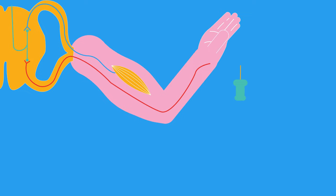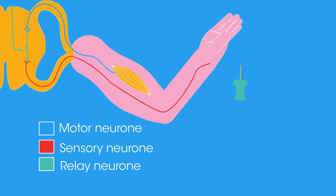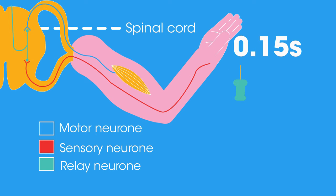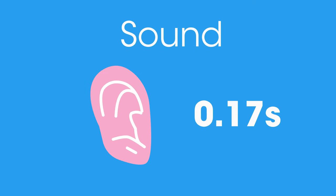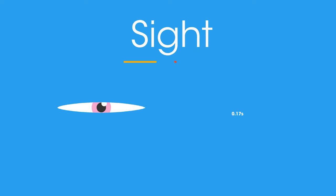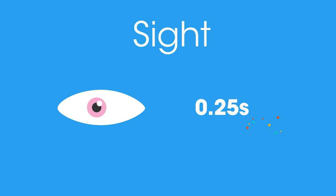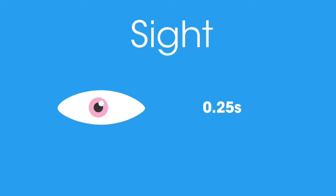We respond to touch quite differently, through the reflex arc, where the response is a reflex action mediated by the spinal cord and not the brain. Our reflex action to a touch takes about 0.15 seconds, to sound it's about 0.17 seconds, and to sight 0.25 seconds.